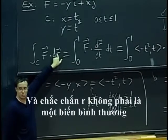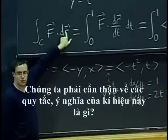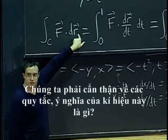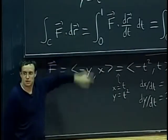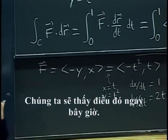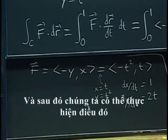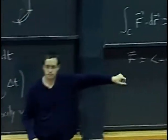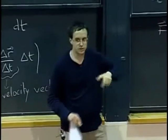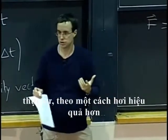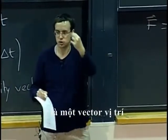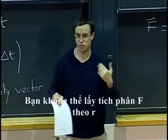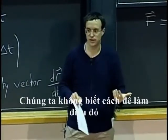Certainly, r is not a usual variable. We have to be careful about what the rules are and what this symbol means. We are going to see that right now, and then we can do it in a slightly more efficient way. r is not a scalar quantity — r is a position vector. So you can't integrate f with respect to r; we don't know how to do that.